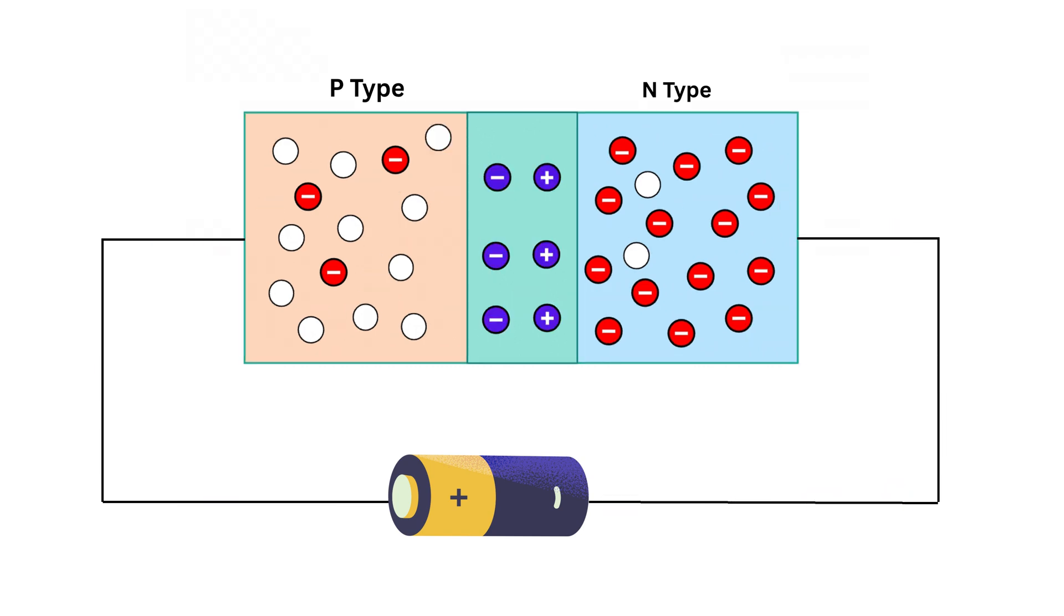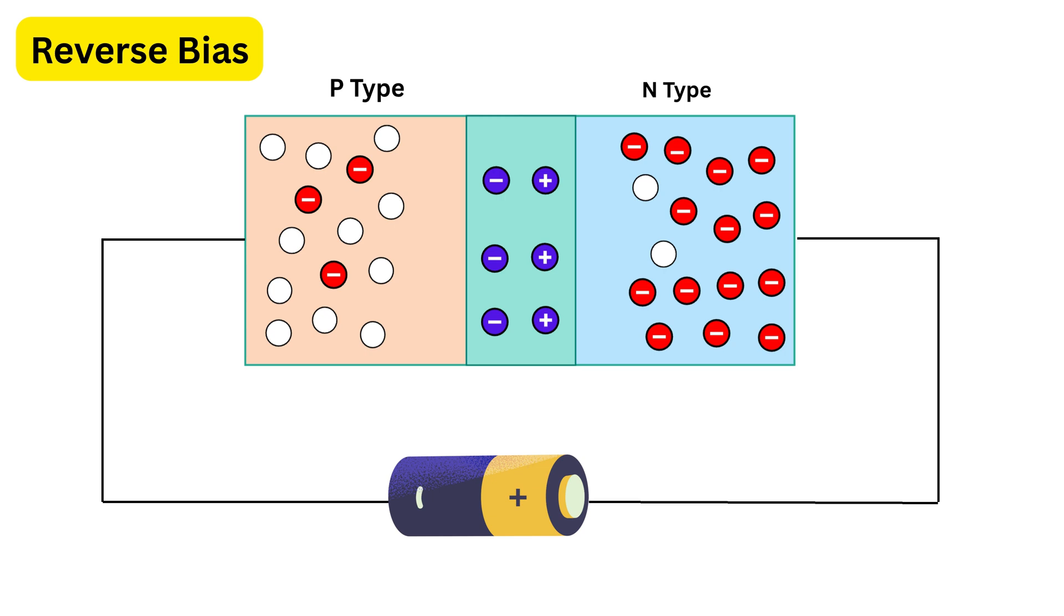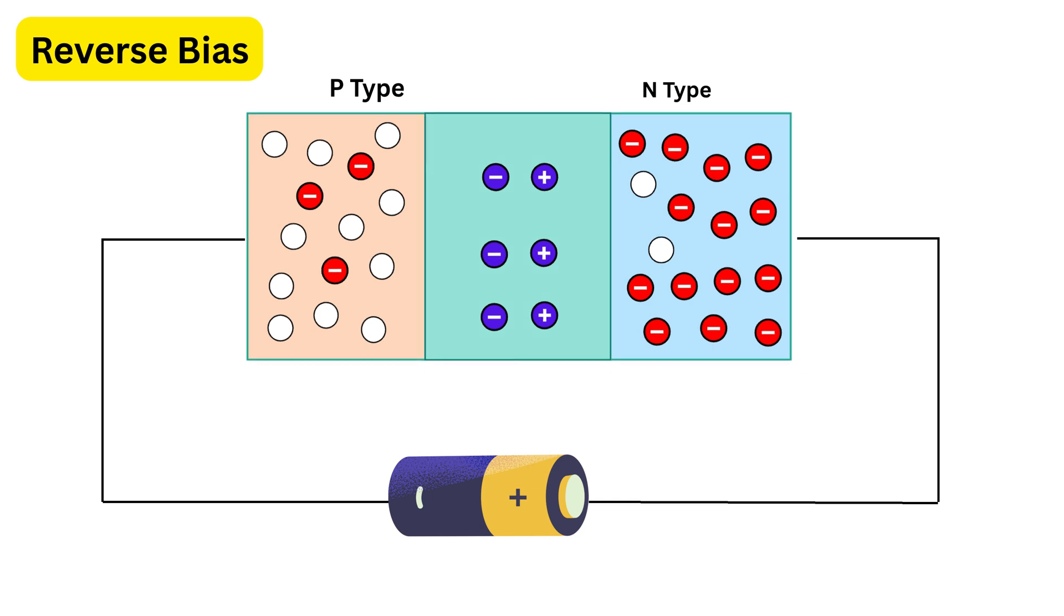But what if we connect the battery in the opposite way? Let's say the positive terminal goes to the N side and the negative terminal to the P side. This is called reverse bias. In reverse bias, the battery is no longer helping—in fact, it's making things worse for current to flow. It pulls electrons even further away into the N side and pulls holes deeper into the P side. This makes the depletion region wider, the electric field at the junction becomes stronger, and it becomes nearly impossible for any charge carriers to cross the junction. So no current flows, except for a very tiny leakage current, which is usually too small and we generally ignore it. This happens because the electric field blocks most charge carriers, but a few electrons or holes from thermal energy still manage to cross it, causing a tiny leakage current.